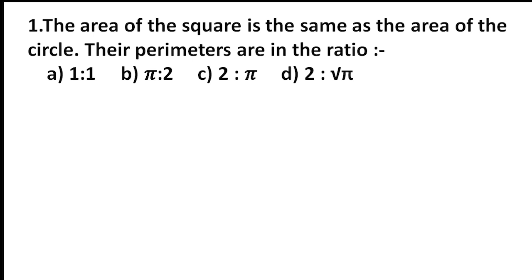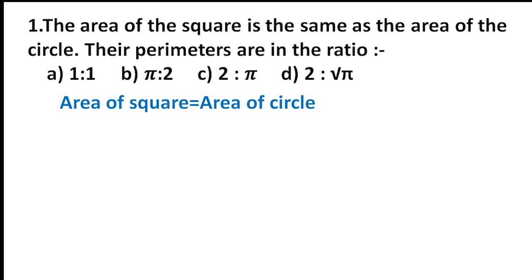Our first question: the area of the square is the same as the area of the circle. Their perimeters are in the ratio. That means we need to find the ratio of their perimeters, given that the area of the square is same as the area of the circle. Area of the square is a², area of the circle is πr². So a² = πr², and a = √π · r.